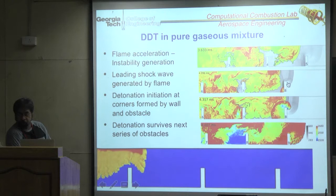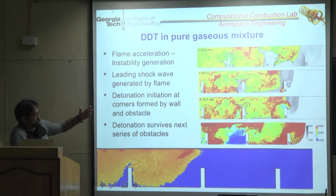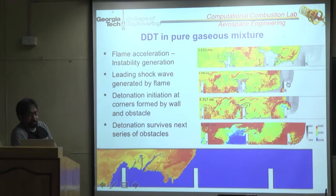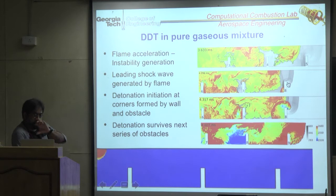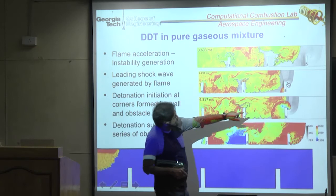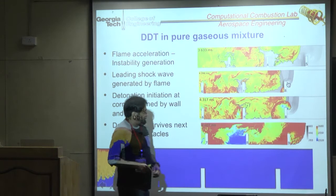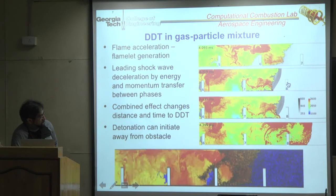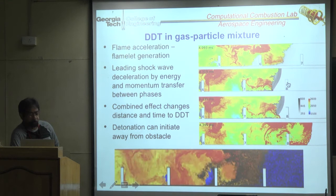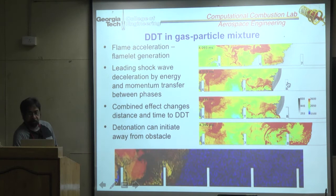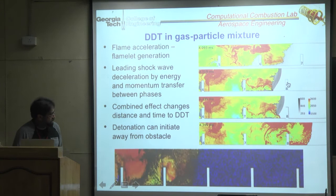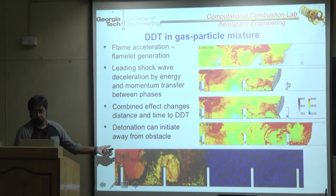This hydrogen mixture detonated in under one meter length very quickly, demonstrating how dangerous premixed detonations are. Adding particles at a certain loading can actually trigger detonation faster through their blockage effect. This is another two-phase problem handled with the same code — whether particles are solid or liquid, the Eulerian-Lagrangian framework applies.